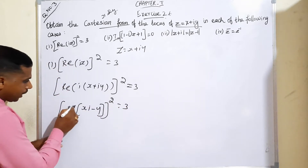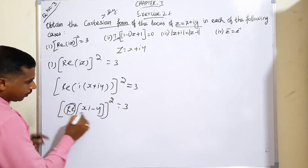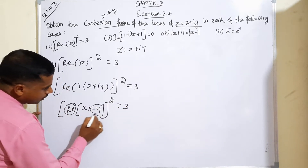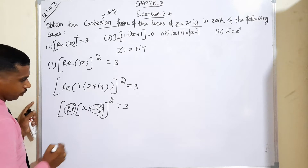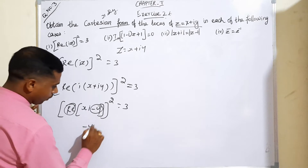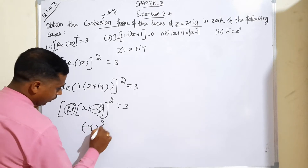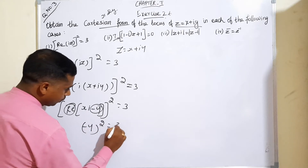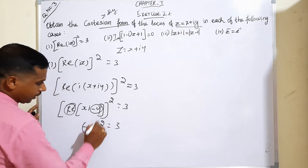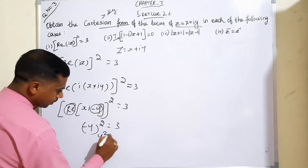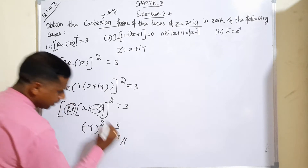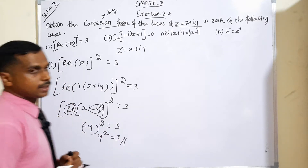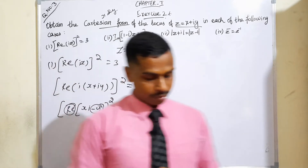We have to select only the real part. The real part is minus y. Therefore, (minus y)² is equal to 3, which means y² is equal to 3. This is the answer for subdivision 1.